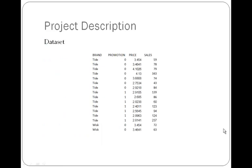Here's how the data set looks. I have 56 observations in the data set — 14 observations for each of the four brands: Tide, Wisk, Era, and Surf. In each brand, I have 14 observations: seven observations for the campaign without promotion and seven observations for the campaign with promotion. The covariate variable here is price, a continuous variable, and the sales figure for the number of detergents sold.